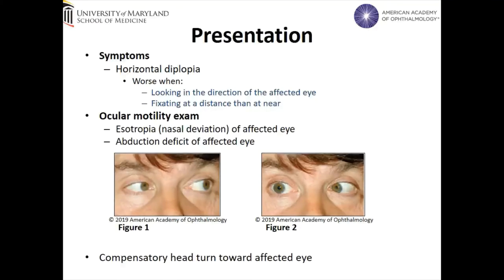Patients with a 6th nerve palsy characteristically present with horizontal diplopia that is worse when looking in the direction of the affected eye and when fixating at a distance as compared to near. On ocular motility exam, patients will exhibit an esotropia or nasal deviation of the affected eye with limited abduction of the affected eye. Below is an example of a patient with an isolated 6th cranial nerve palsy of the right eye. Patients may compensate for this by turning their head to the affected side as a way of mitigating their symptoms of diplopia.